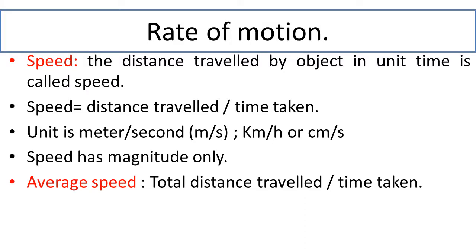If we talk about average speed, it is the total distance traveled divided by total time taken. For example, assume your journey is 4 hours. In those 4 hours your speed varies: first hour 10 km/h, next 20 km/h, then 30 km/h, then 40 km/h. The overall average of these is called average speed. Speed is an important parameter that describes the rate of motion.